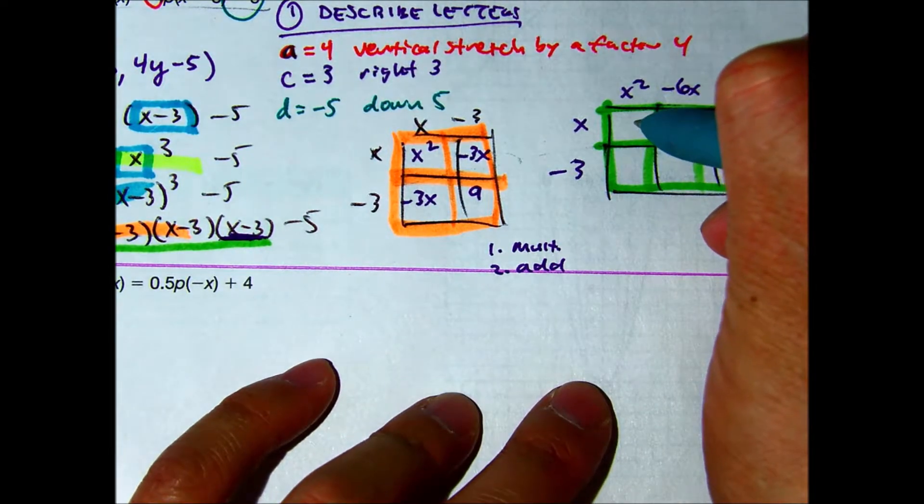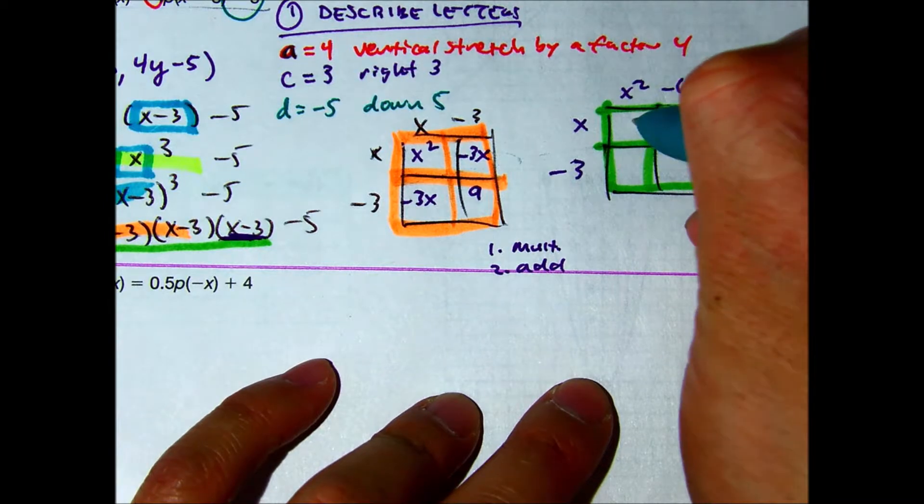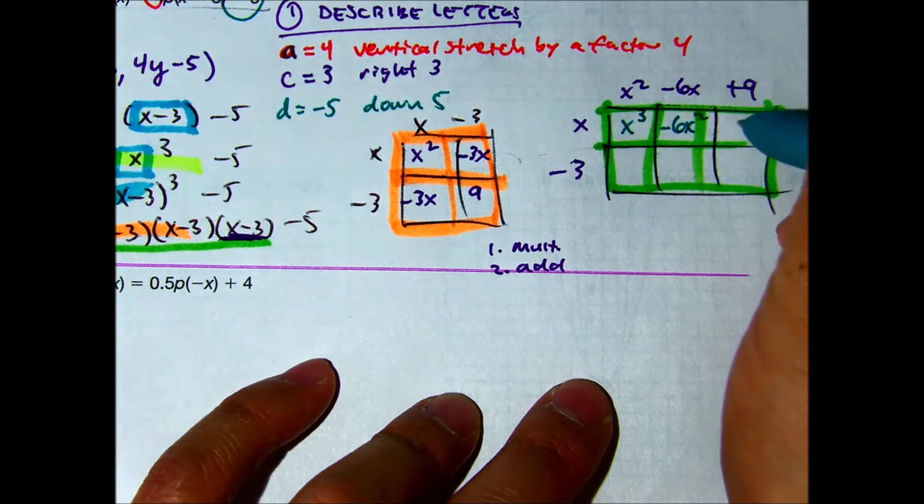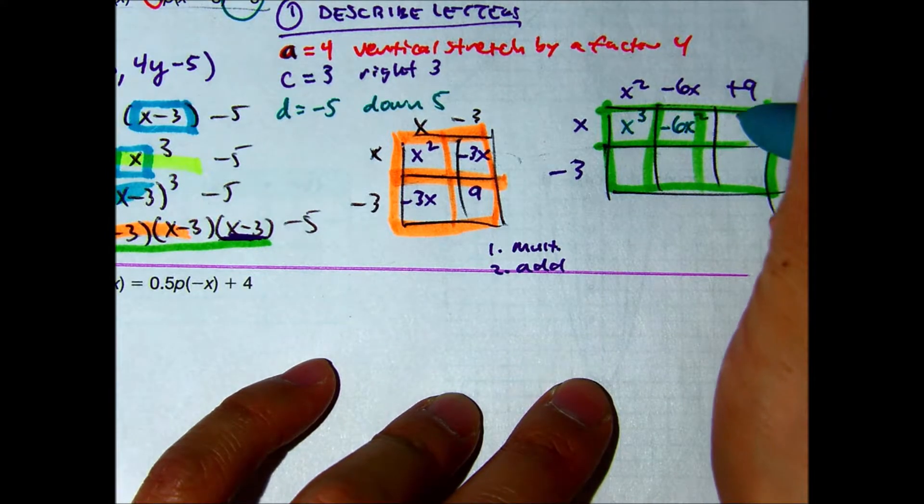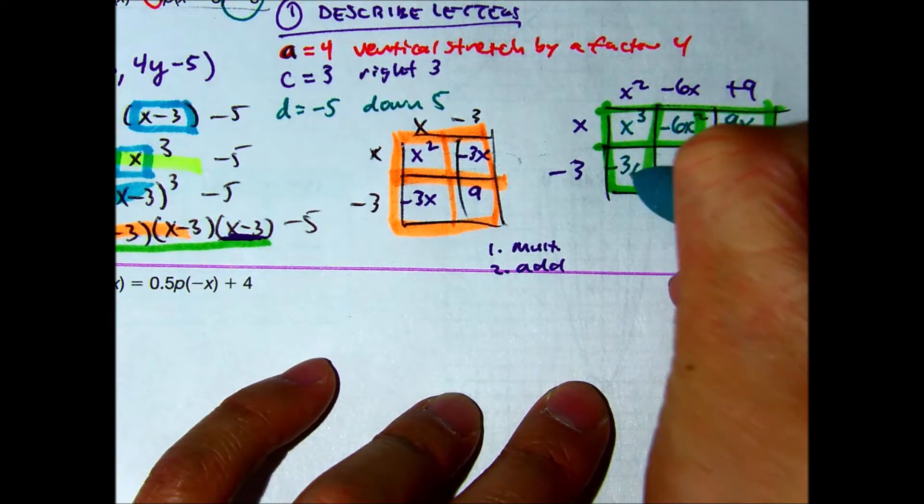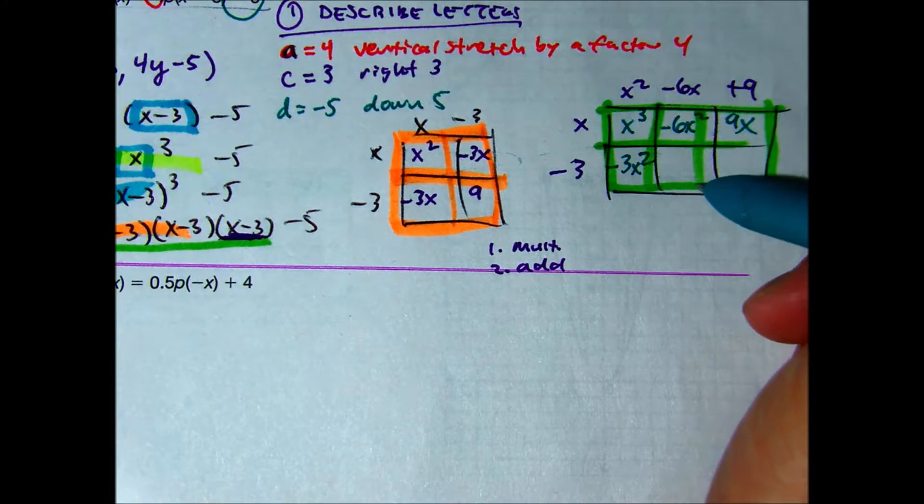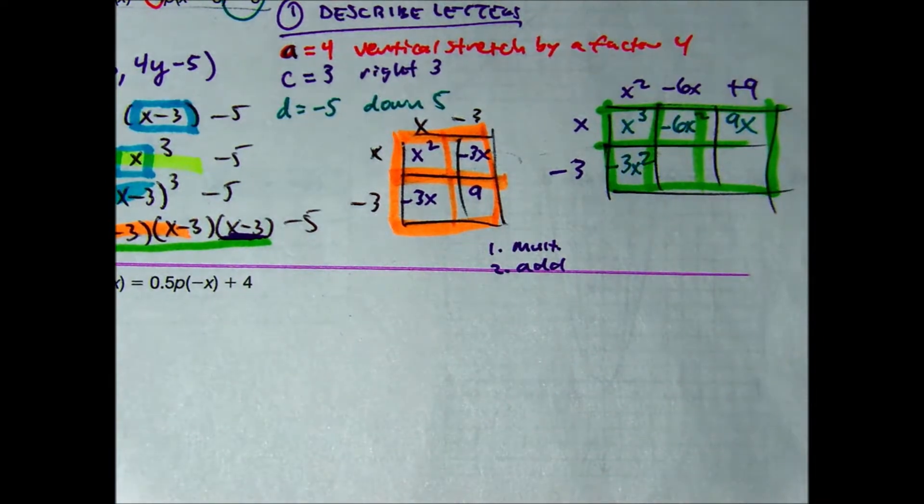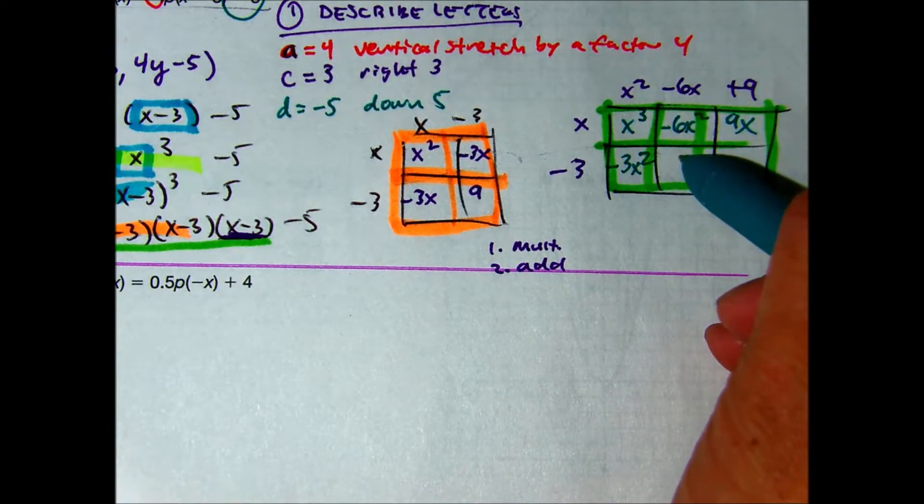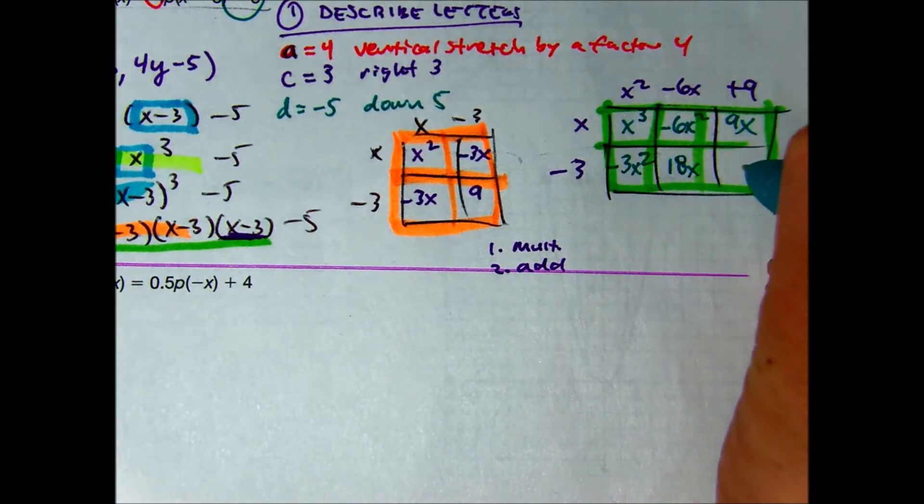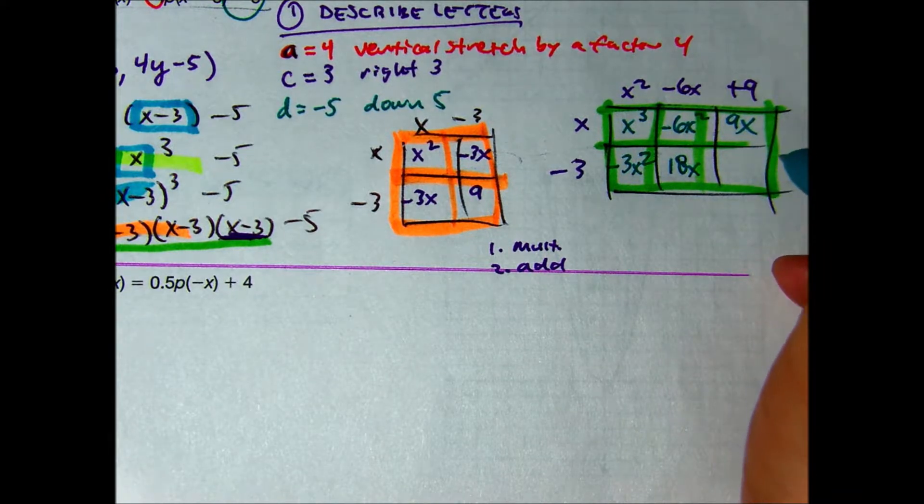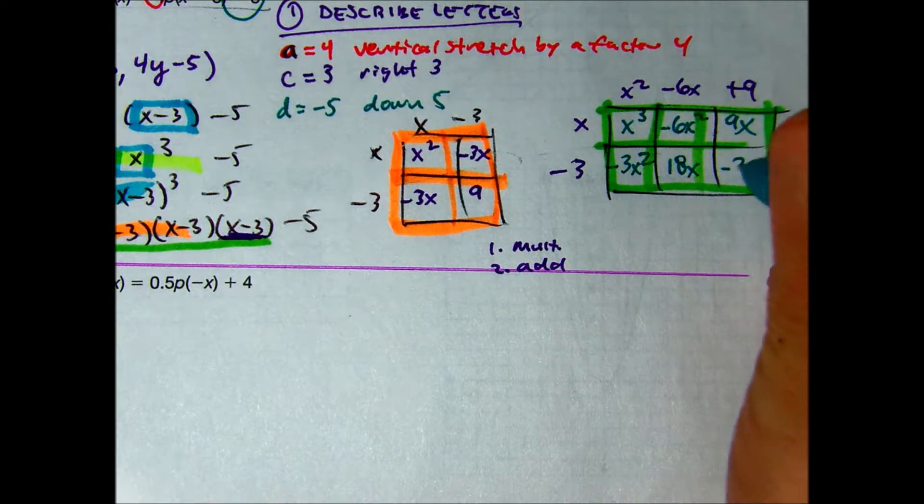X cubed? Here. This one here, Brittany? Negative 27. Thank you.